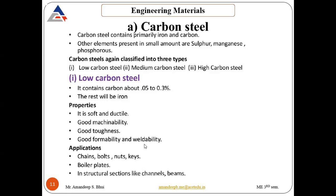Formability is the property that we can form the material into any shape; weldability means two parts can be welded easily; and machinability means it can be machined into any shape easily. Applications of low carbon steel include chains, bolts, nuts, keys, boiler plates, and structural sections like channels and beams.